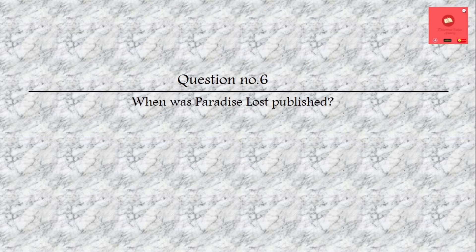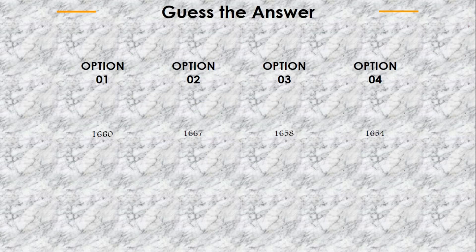Question number 6: When was Paradise Lost published? Options are: in the 1660s, 1667, 1658, or 1654. The answer is 1667.